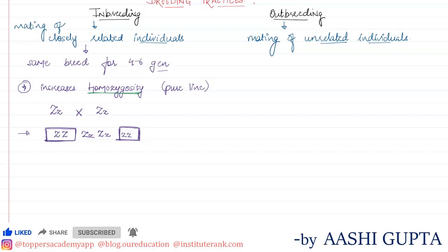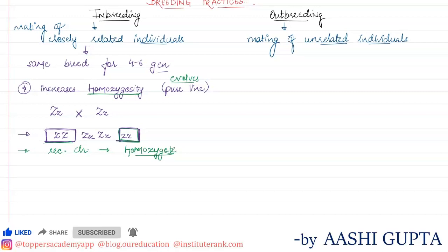So inbreeding evolves a pure line — the homozygous characters keep increasing with each individual. This also increases recessive characters, since recessive characters can only express themselves in a homozygous condition. However, inbreeding also helps in increasing superior characters.